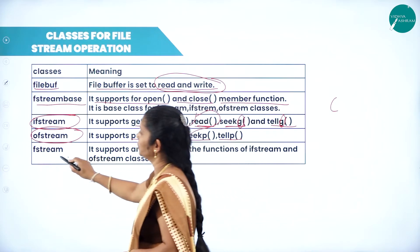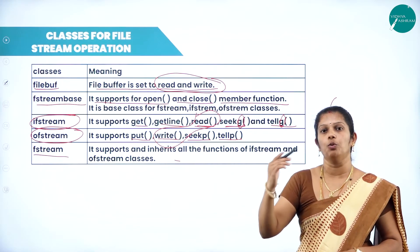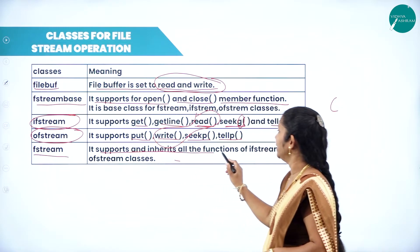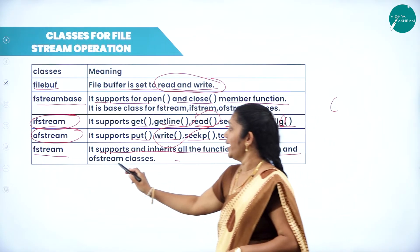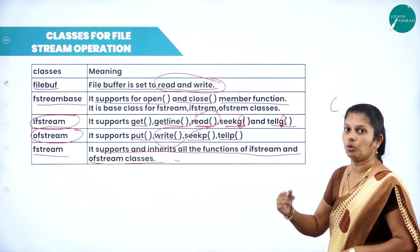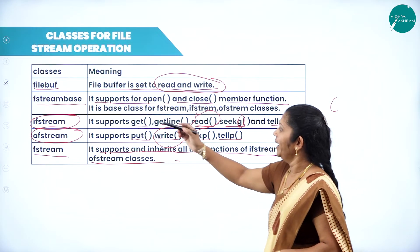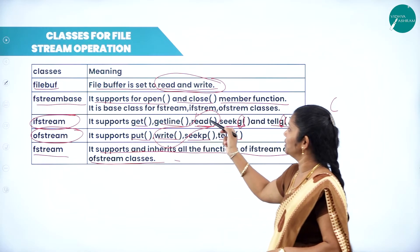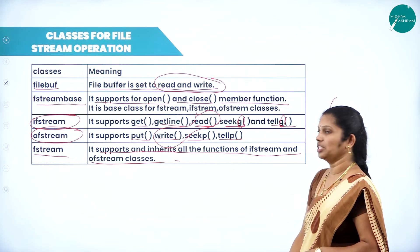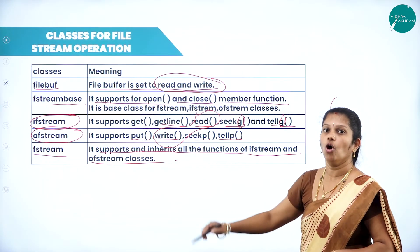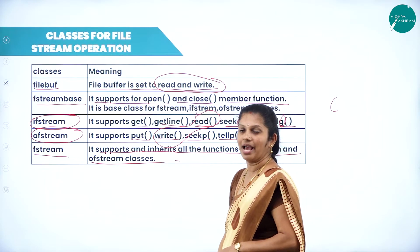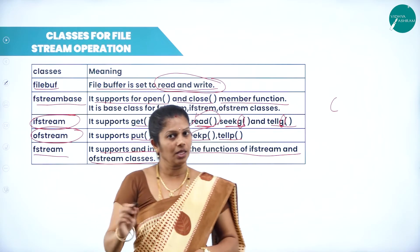fstream includes both ifstream and ofstream — it inherits all the functions of both classes. That means it supports both input and output operations: get(), getline(), read(), seekg(), tellg(), put(), write(), seekp(), and tellp().